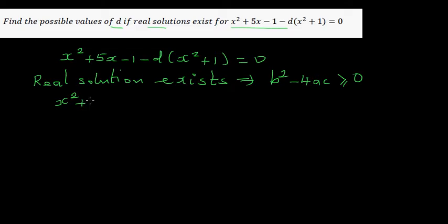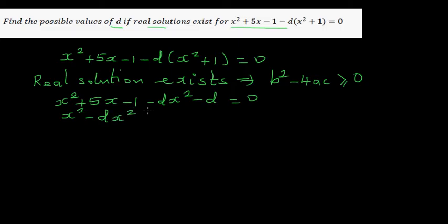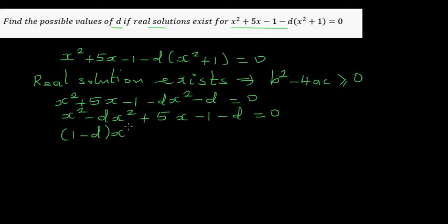Expanding the equation: x squared plus 5x minus 1 minus d times x squared plus 1 equals 0 gives x squared plus 5x minus 1 minus dx squared minus d equals 0. Simplifying, this becomes 1 minus d times x squared plus 5x minus 1 minus d equals 0.